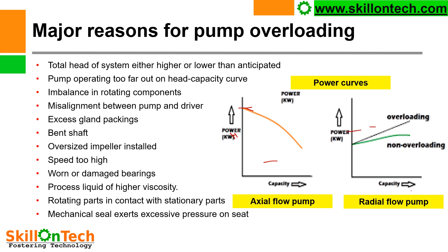If your pump is running on the HQ curve at BEP (best efficiency point), then it will take minimum power. But if the pump is running out of BEP, then the pump will take more current, and that will be a condition of overloading, as you can see here.